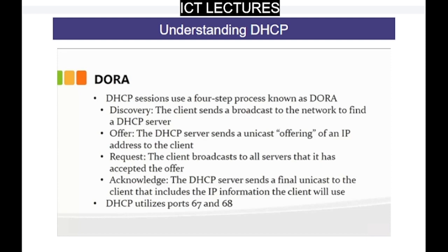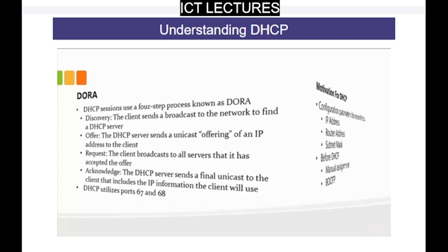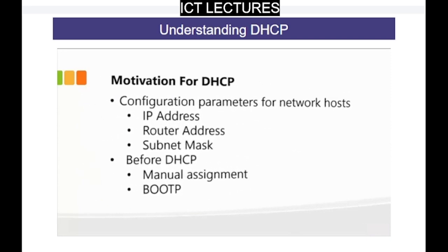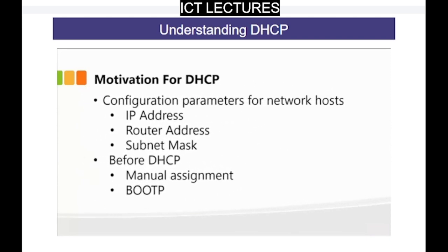Once the server completes this process, the DHCP service utilizes ports 67 and 68 to do this. The real motivation for using DHCP is that the configuration parameters for network hosts — the IP address, the router address, and the subnet mask — are required.